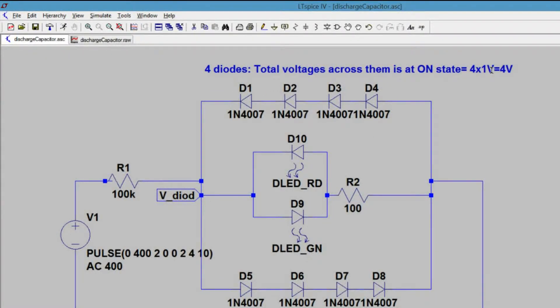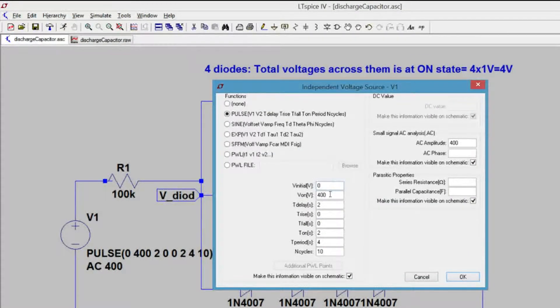The pulse generator is representing the capacitor in the LTSpice circuit. The pulses are between 0 to 400 volts. Download the LTSpice file to get a better idea about the circuit.